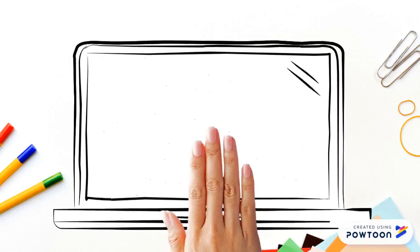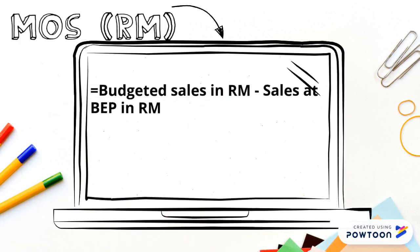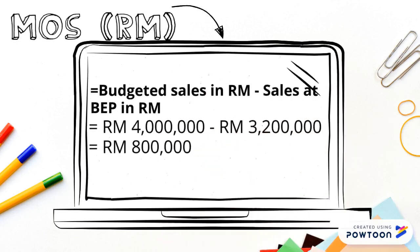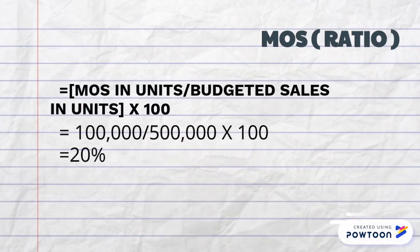To calculate margin of safety in ringgit, we must subtract sales at break-even point in RM from budgeted sales in RM. To calculate margin of safety in ratio, we must divide margin of safety in units by budgeted sales in units and multiply by 100%.